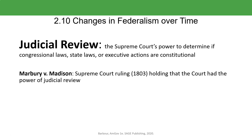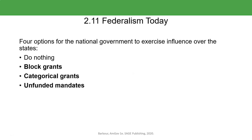Under Marbury v. Madison in 1803, they set up the entirety of the judicial branch of government to interpret all the laws and to decide whether those laws are constitutional or legal. This is the structure of our system. The government also funds the states through various types of grants — block grants, categorical grants, or unfunded mandates are three of the mechanisms used to fund the states from the national government.